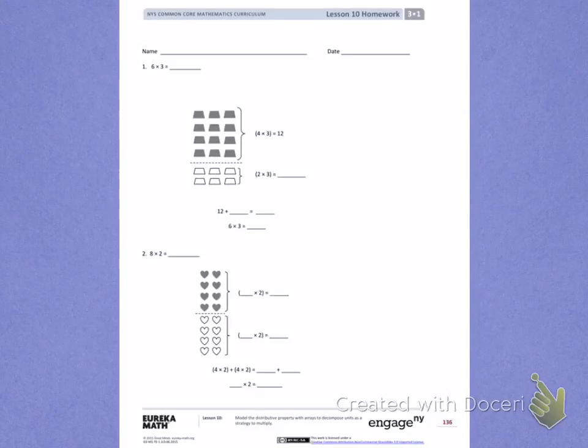This is Module 1, Lesson 10. Today's objective was to model the distributive property with arrays to decompose units as a strategy to multiply.